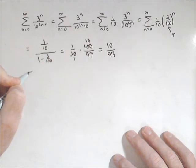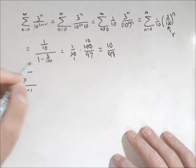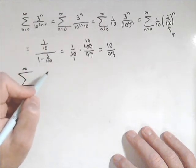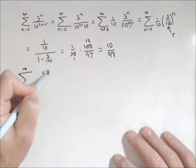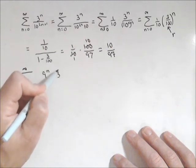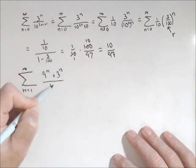Let's look at one more that initially may not look like a geometric. n equals 1 to infinity of 9 to the n plus 3 to the n over 10 to the n.